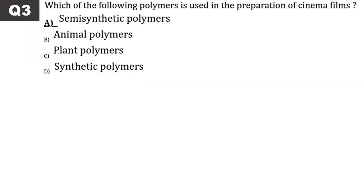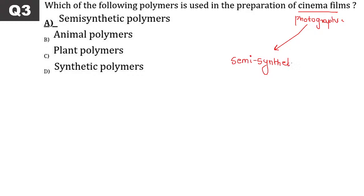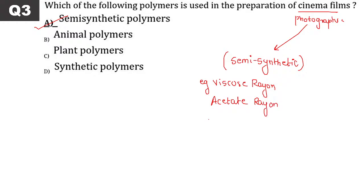Question number 3: Which of the following polymer is used in the preparation of cinema films? Photographic films or cinema films — same answer. Photographic films use semi-synthetic polymers. In the synthetic polymer paragraph, under animal polymer, plant polymer, synthetic polymer — the answer is semi-synthetic polymer, for example viscose rayon, acetate rayon, cuprammonium silk.